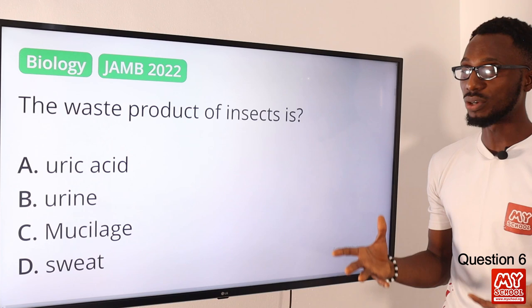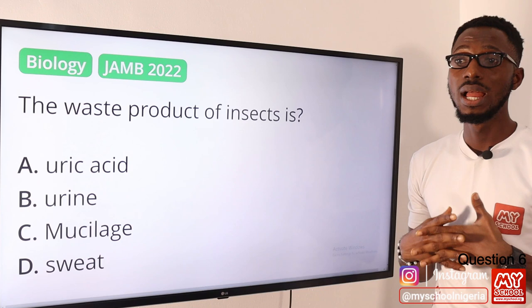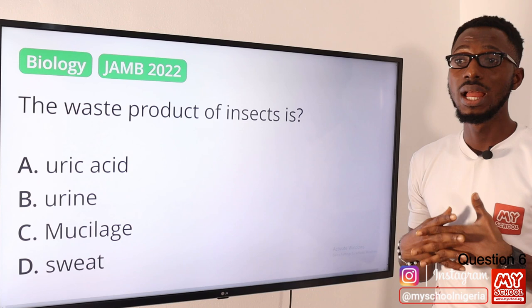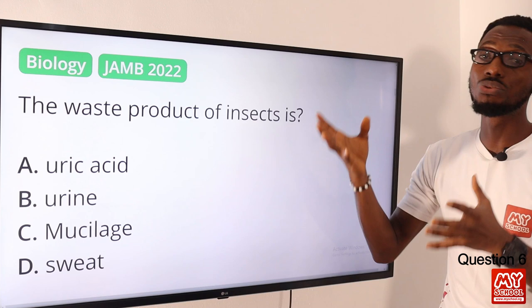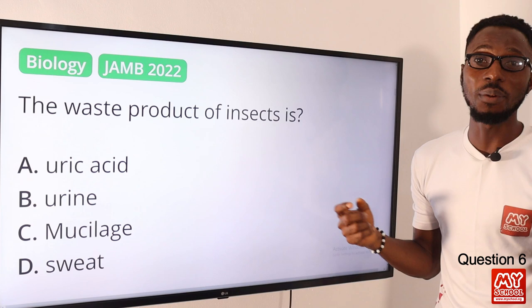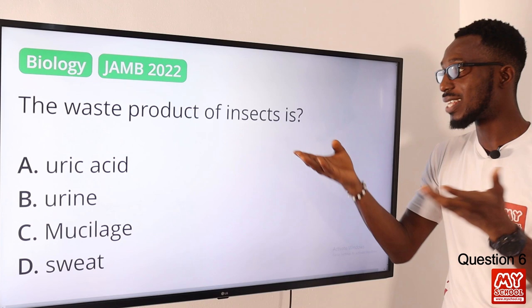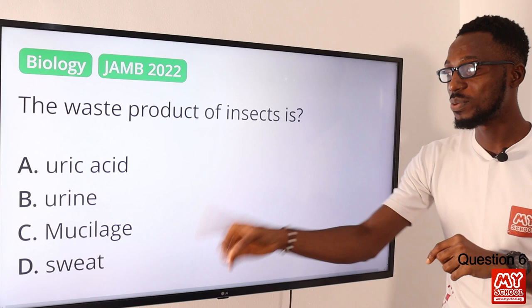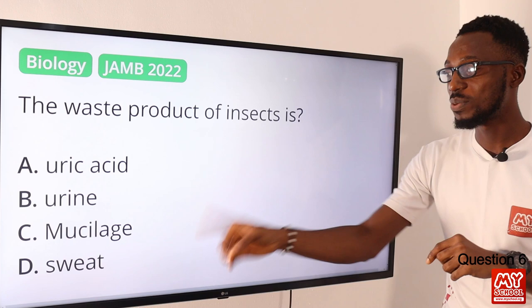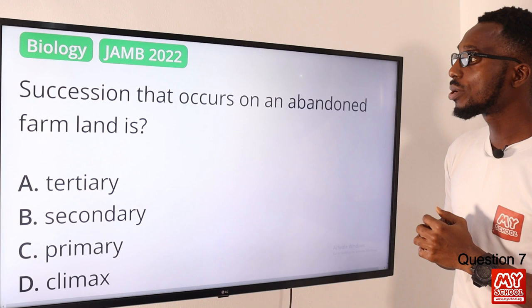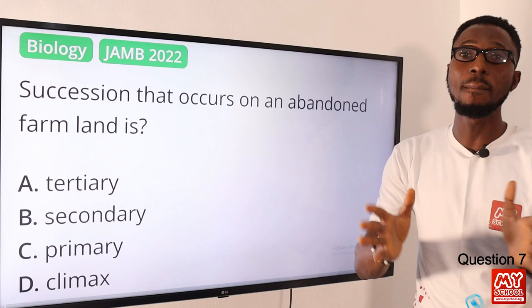Question six: the waste product of insects is what? The basic excretory organ of insects is the Malpighian tubules, and what comes out of it is uric acid. Uric acid has very distinct properties. Sweat belongs to mammals which have sweat glands. The correct option is option A — uric acid.